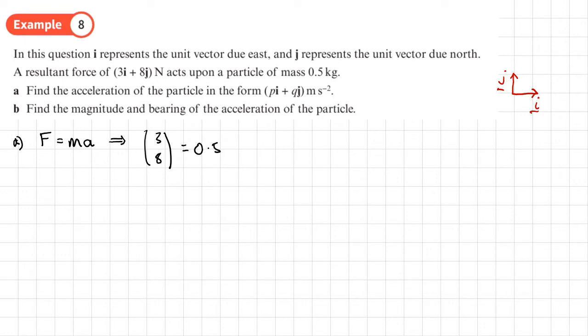So the force I'm going to write as a column vector: (3, 8) equals the mass, which is a scalar, 0.5 times by the acceleration (p, q). I can rearrange this by multiplying both sides by 2 to get rid of that 0.5, and then I'll have (6, 16) equals (p, q).